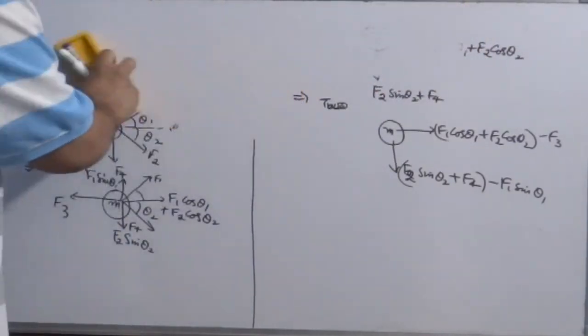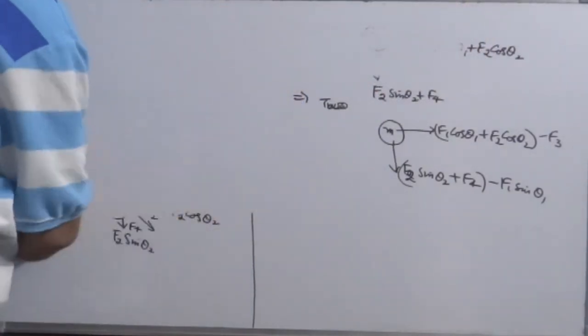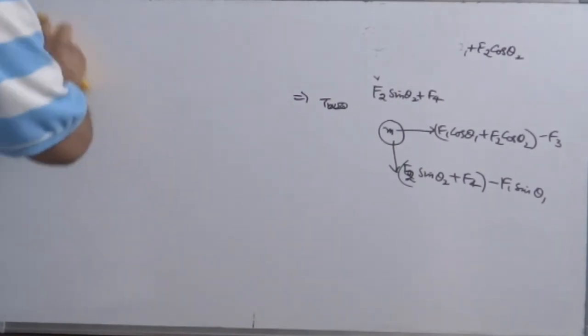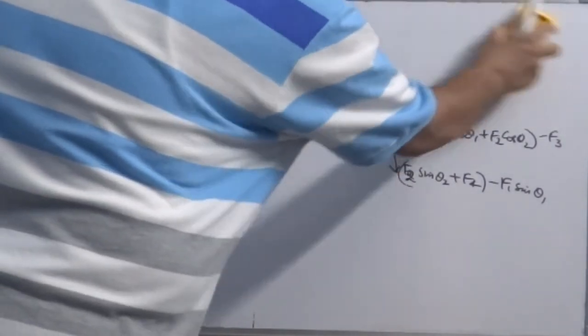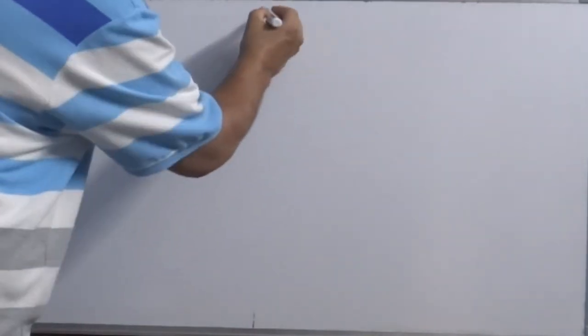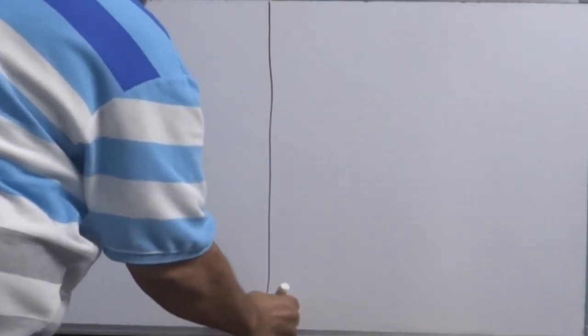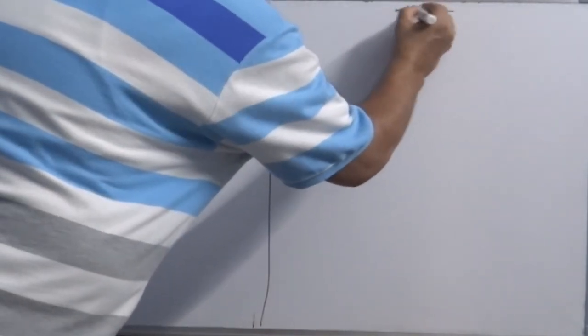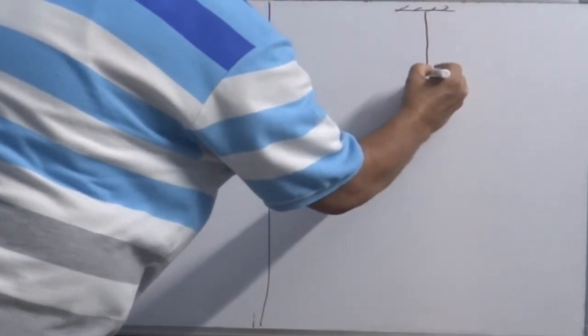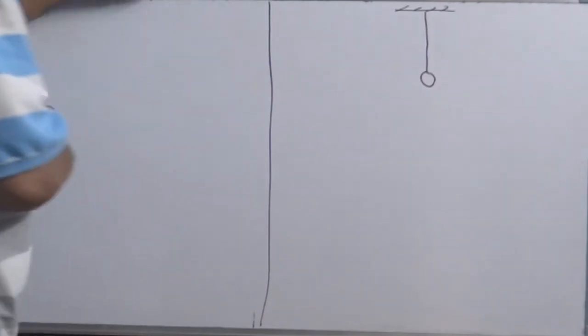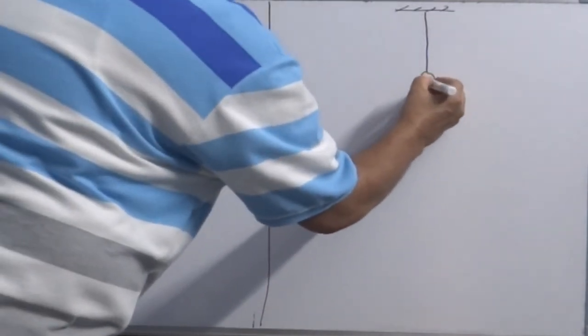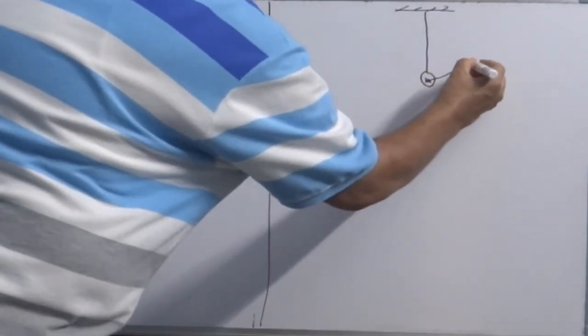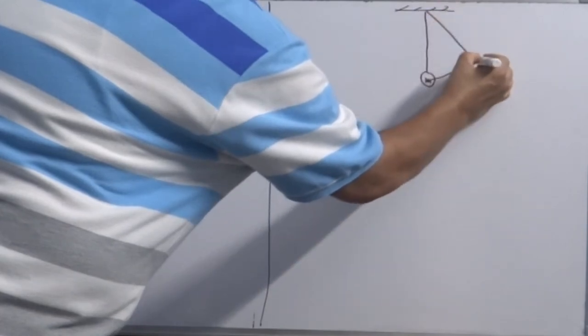Let's see one more example. Suppose the bob of the simple pendulum. The bob is suspended vertically, basically mass M.